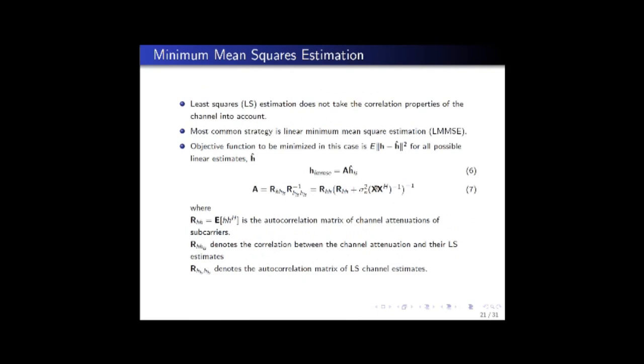But the drawback of least squares estimation is that it does not take the correlation property that we discussed earlier into account. So the most common strategy is linear minimum mean square estimation or LMMSE. The objective function in this case is to minimize the expected value of (H - H cap)² for all possible values of linear estimates H cap. And H_LMMSE is given by A times H_LS. In turn, A is given by this equation where RHH corresponds to the autocorrelation matrix of channel attenuation of subcarriers. RHH is the cross-correlation matrix between the channel attenuation and the least square estimates. And RHH is the autocorrelation matrix of the least square channel estimates.